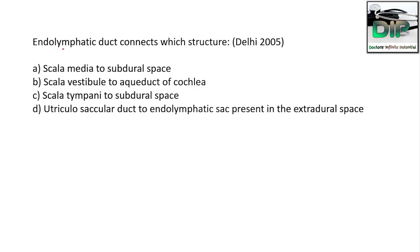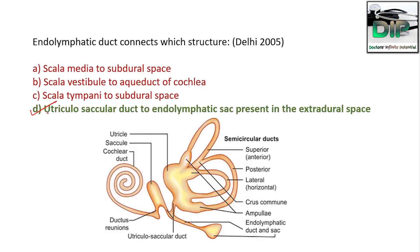Next question. The endolymphatic duct connects which structure? Option A: scala media to subdural space. Option B: scala vestibuli to aqueduct of cochlea. Option C: scala tympani to subdural space. Option D: utriculosaccular duct to endolymphatic sac present in the extradural space. The correct answer is: utriculosaccular duct to the endolymphatic sac present in the extradural space.